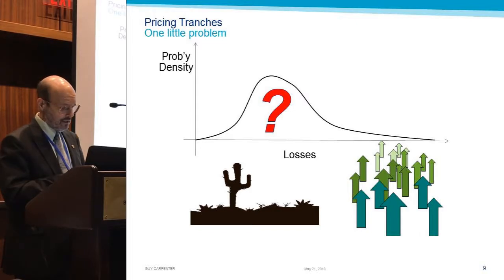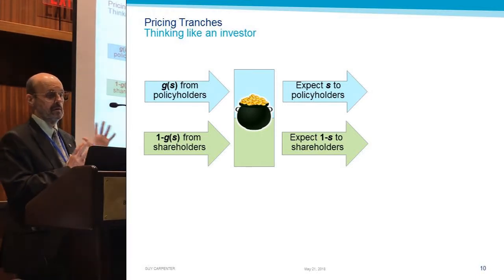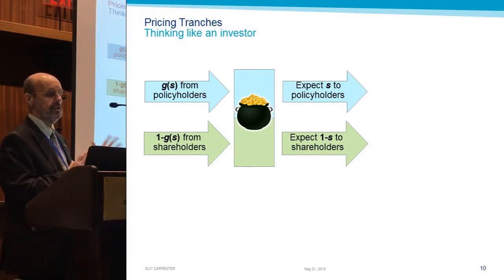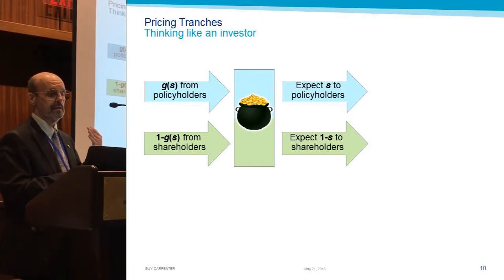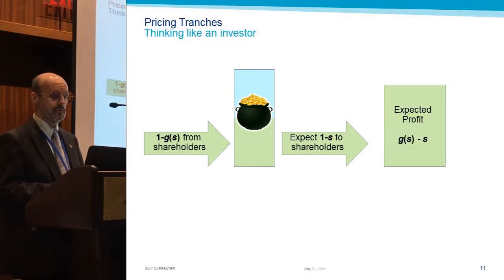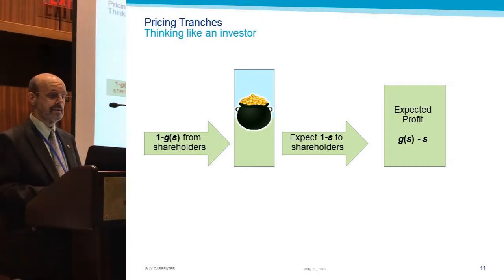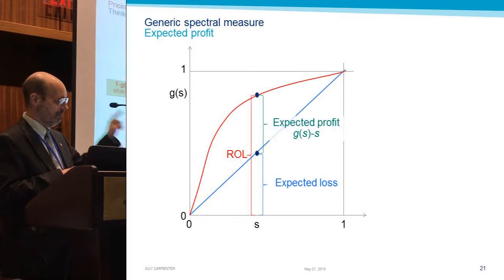Well, we're going to think like investors. Let's go back to that pot of money. Ahead of time, this tranche is getting funded — G of S is coming from the policyholders and 1 minus G of S from the shareholders. And then in the end, it's either all going to the policyholders or all going to the shareholders, but in expectation, we're expecting S of it to go to the policyholders and 1 minus S to the shareholders. The shareholder has an expected profit of what comes out minus what comes in, which is G of S minus S — the distance between the diagonal line and the G of S function. The investment is what the shareholder supplies, and the ratio is the ROE.